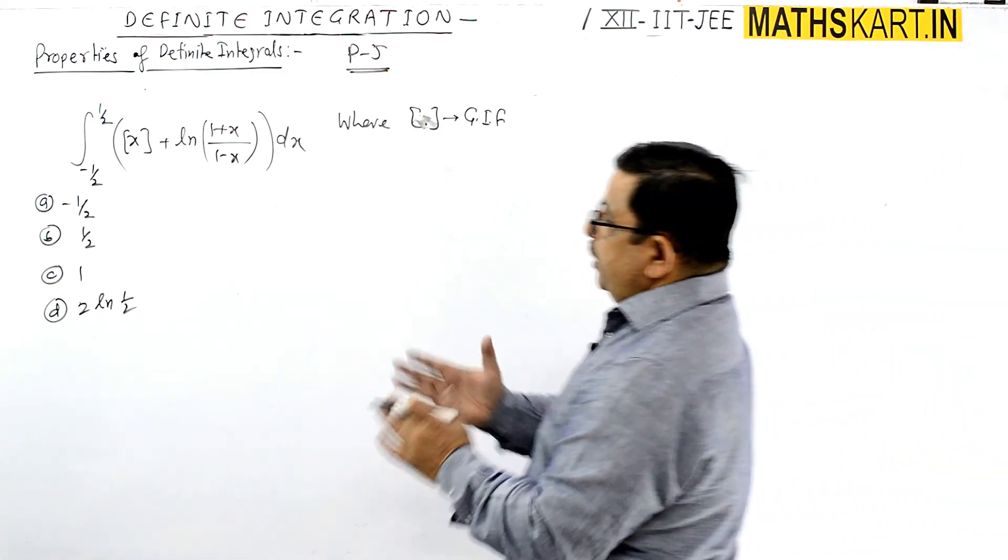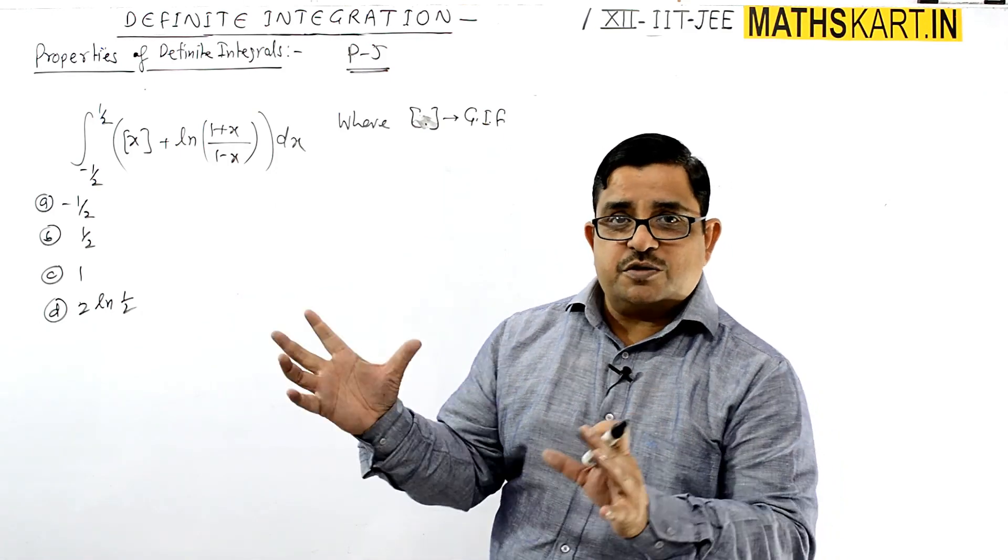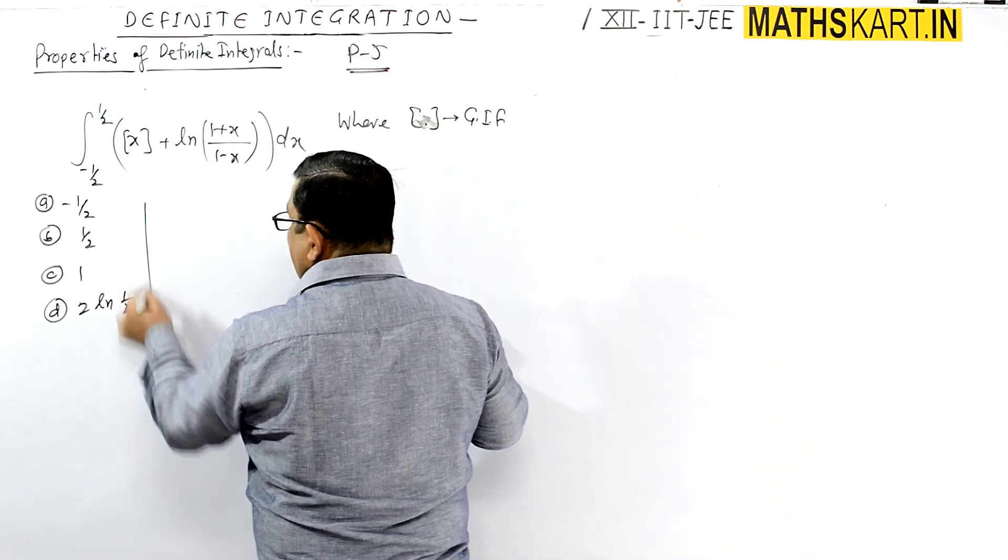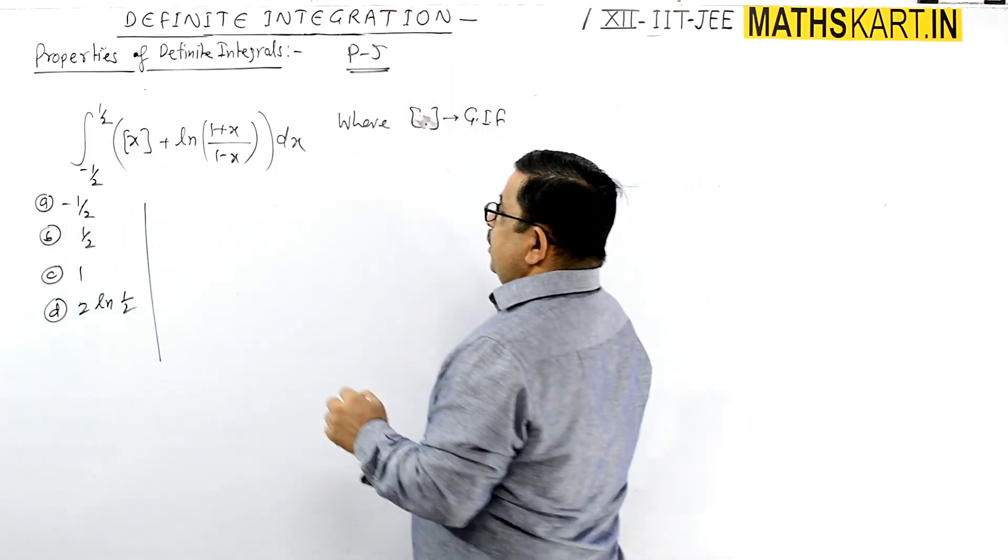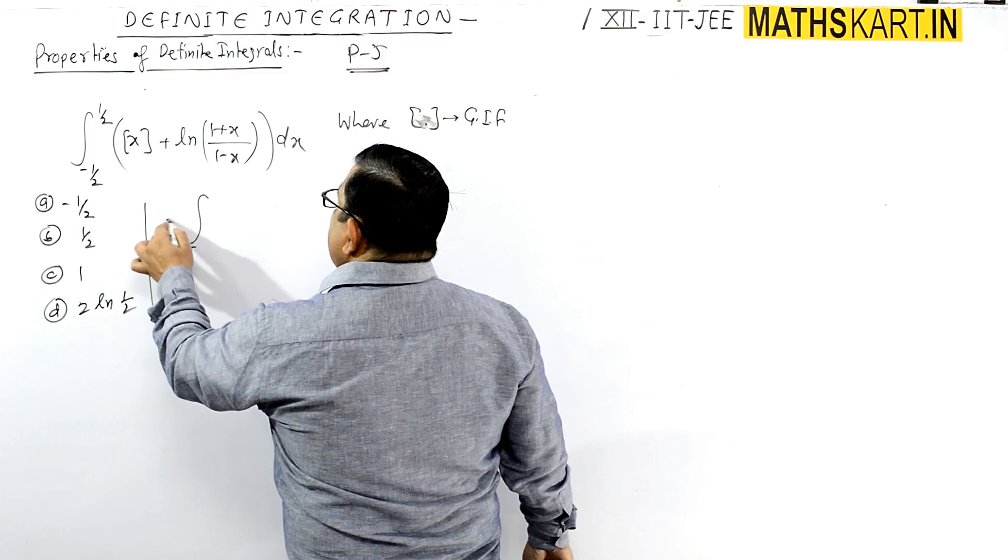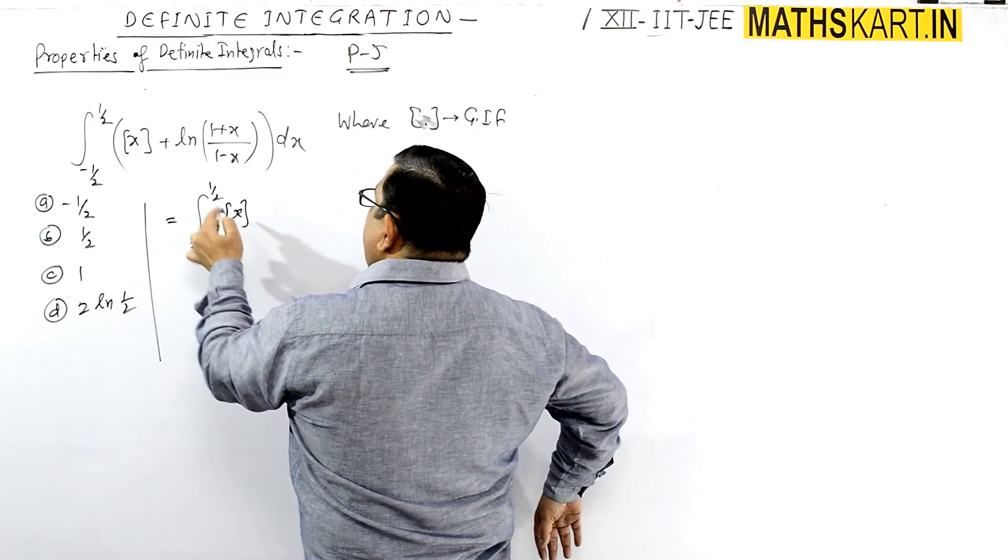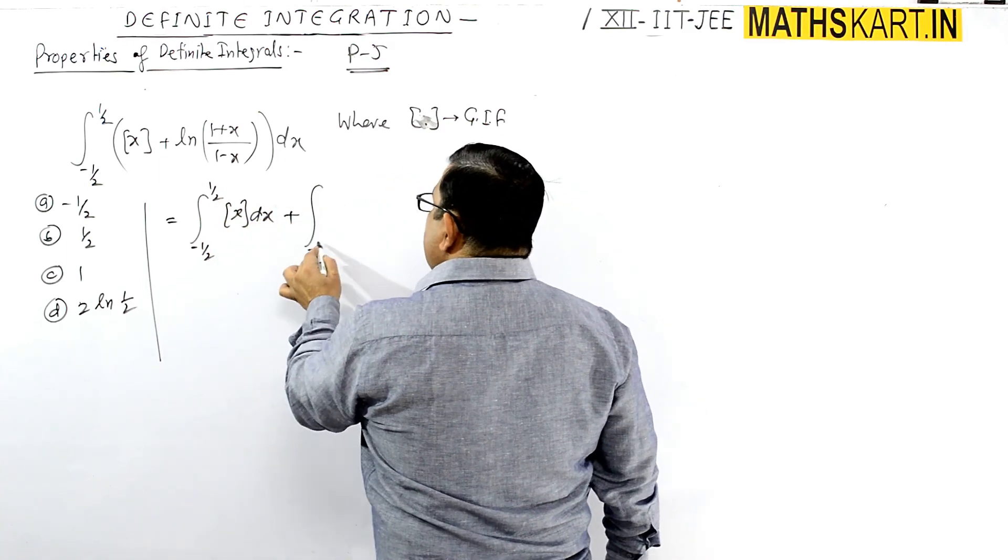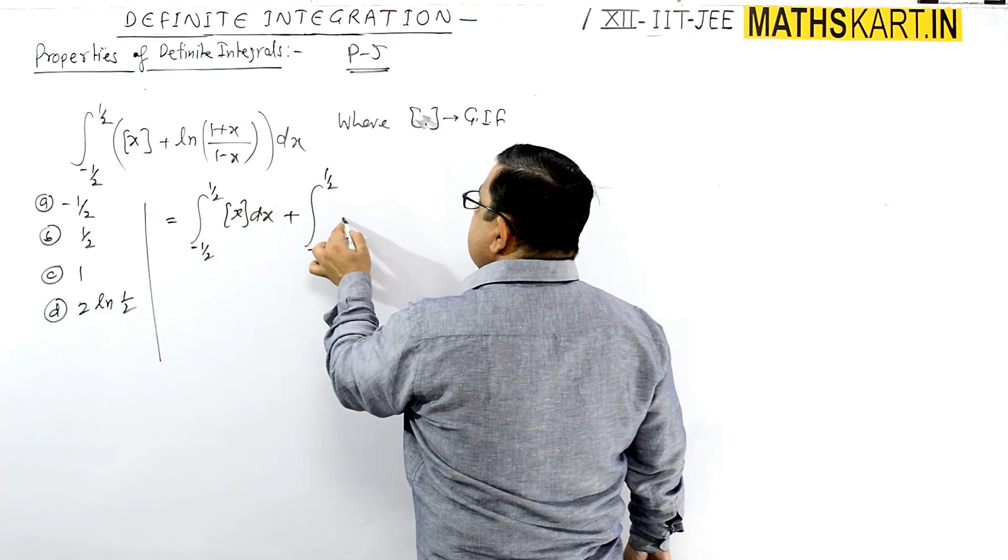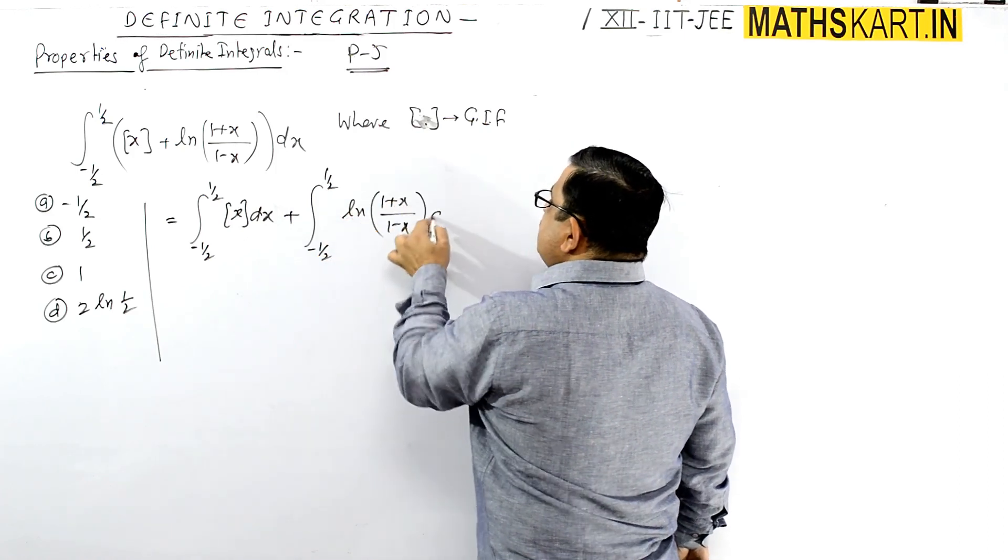We'll partition this into two different questions. The limits are -1/2 to 1/2. Property 5 will be used. When you partition, it becomes: from -1/2 to 1/2 of greatest integer of x dx, plus from -1/2 to 1/2 of ln(1+x)/(1-x) dx.